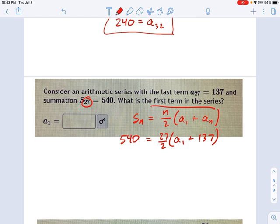Okay, so you see, once again, we have an equation where we know just about everything in it, there's just one missing thing. So we're going to do 540 divided by 27 times 2. Okay, so this is equal to 40. And that's a1 plus 137. So you subtract 137 from each side.